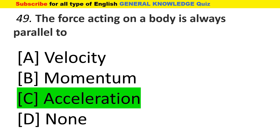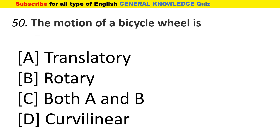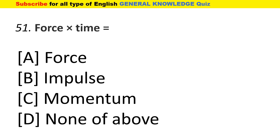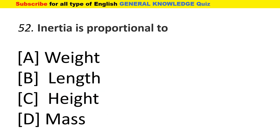The motion of a bicycle wheel is both A and B. Force into time gives the answer impulse. Inertia is proportional to mass.